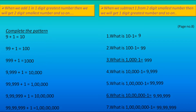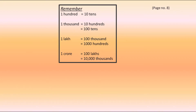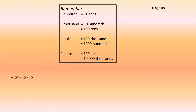Now, I want to explain the points given in the box with the heading 'Remember' on page number 8. The first point says: 100 is equal to 10 tens. You must be thinking, how is that possible? As everyone knows, 100 can be written as 10 into 10. This means 100 is 10 times 10, so it can be written as 100 is equal to 10 tens.